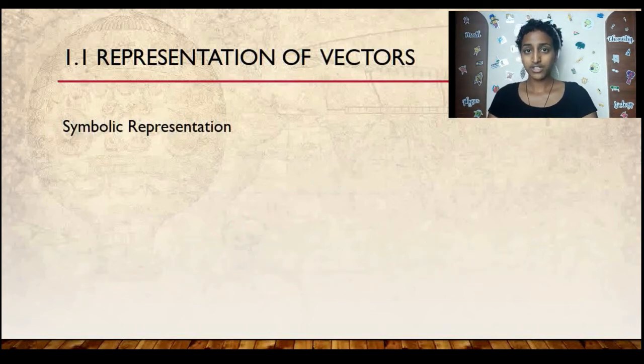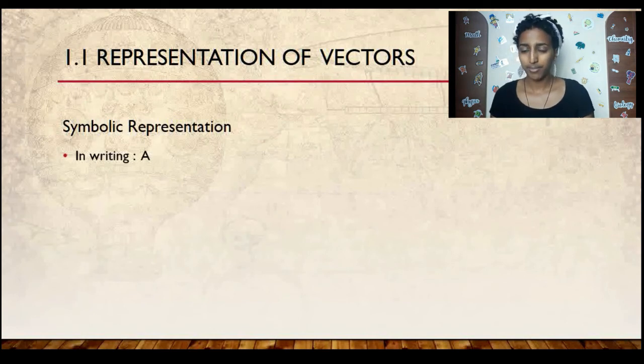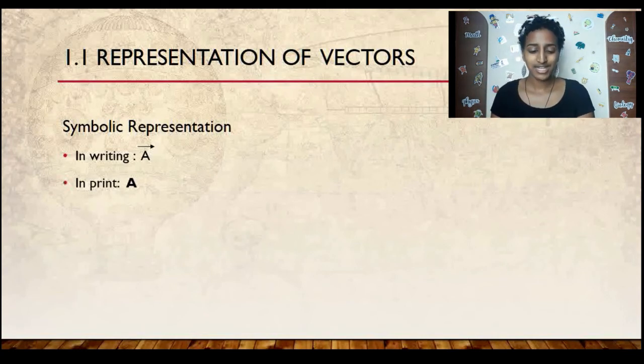Next, we have symbolic representation. Now, there's two ways to symbolically represent a vector. If you are writing it by hand, you just write the name of the vector. For example, in this case, A. It's usually a capital letter. And you put an arrow on top of the vector. That's when you're writing it by hand. When you're writing it on your computer, you just write the name of the vector in boldface. So in this case, it's again A, but you write it in boldface.